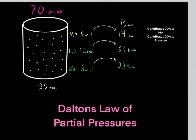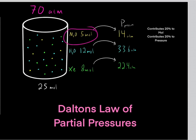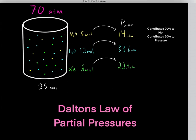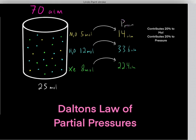This is referred to as Dalton's law of partial pressures. The key idea is that each gas is doing its own thing. Once you find the mole fraction of a gas and multiply it by the total pressure, you find the partial pressure — which is essentially that gas's contribution to the total pressure.